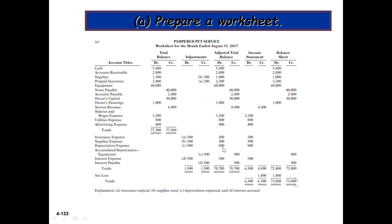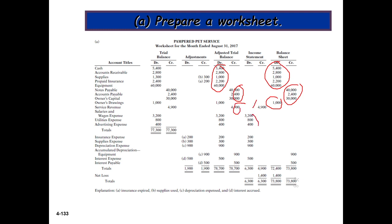Now for the income statement and balance sheet columns, we classify items accordingly. Balance sheet items include asset-side items and liability-side items. The drawing item is a debit item placed in the balance sheet. Revenue is placed in the income statement, and expenses are also income statement items. Interest payable is a liability and goes to the balance sheet.